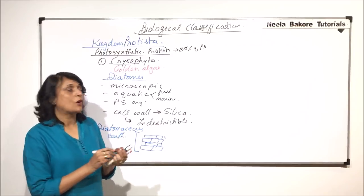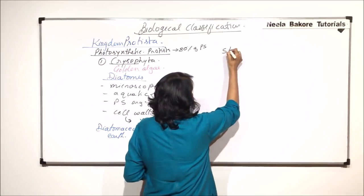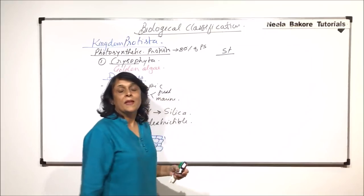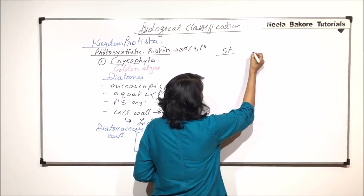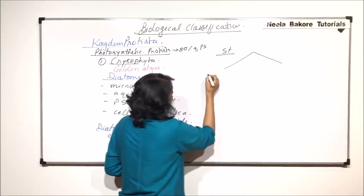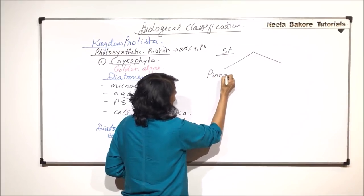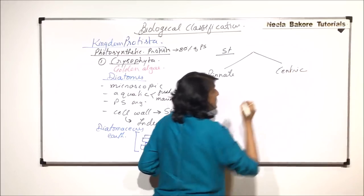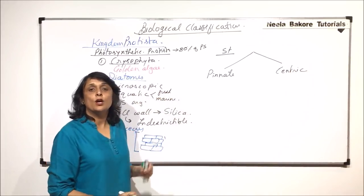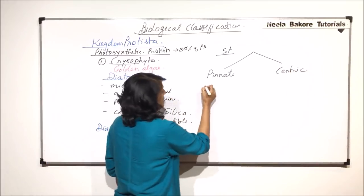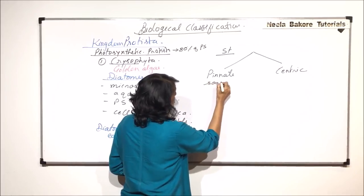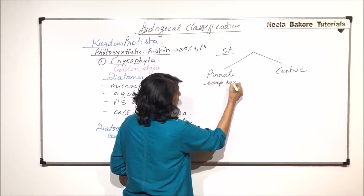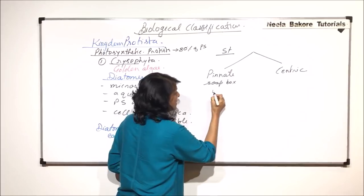Before that, we will talk about the structure of diatoms. Diatoms are of two types on the basis of their shape: pinnate type and centric type. Pinnate type resembles a soap box, similar to a rectangular soap box.